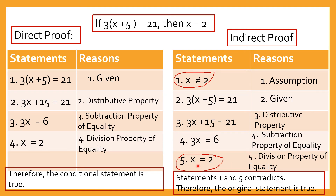In case the last statement were also not equal to 2, that would mean the original statement is not true, because both of them can't be not equal. One should be equal and one should not be equal. So statement 1 and statement 5 contradict, therefore the original statement is true.